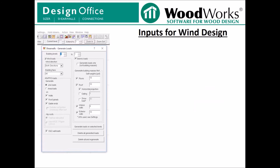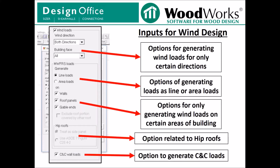After the load generation site information window, you move forward to the load generation screen, where you can choose to generate only wind or seismic loads. At the top, you have options to generate loads in certain directions only; by default, Shearwalls generates loads in each direction and designs each wall for the worst case. There is also an option to generate loads as line or area loads, which affects how the resulting wind loads are reported in the log file. You can generate wind loads on certain portions of the building, and there are options related to hip roofs from ASCE 7-10. Finally, there is a toggle to generate components and cladding loads, which is on by default. If you want to reduce output size or skip components and cladding checks, you can uncheck it. Components and cladding loads check the bending of the wall sheathing on the exterior and the pull-out resistance of the nails fastened to the sheathing.